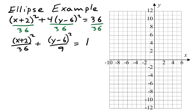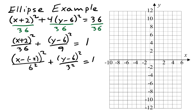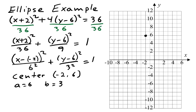That lacks only a few minor touches of being in standard form. The standard form calls for X minus something and Y minus something, so we change X plus 2 to X minus negative 2. The denominators should be written as squares: 36 as 6 squared and 9 as 3 squared. Now in standard form, we can see the center has coordinates negative 2, 6. The one under the X is 6 squared and the one under Y is 3 squared. A is always the larger one — in this case 6 — and B is the smaller one. Since the 6 is under the X, the major axis is horizontal.